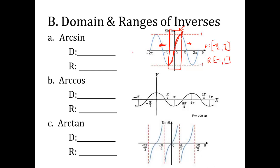Remember with inverses, domain and range flip places. So the domain of arc sine is negative 1 to 1, and the range is negative pi over 2 to pi over 2. Just like with x-y tables where inverses had x and y switch places — that's what creates the inverse. We're switching the domain and range for the inverse functions.